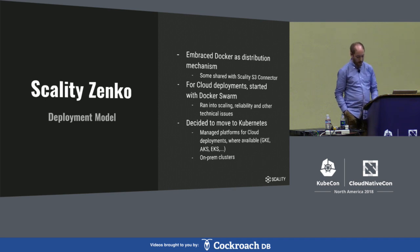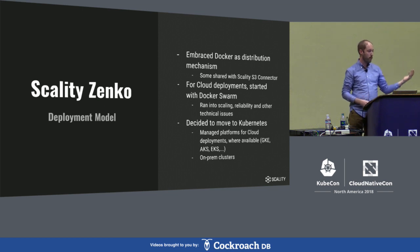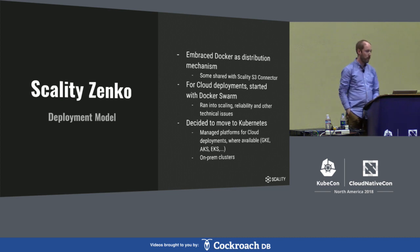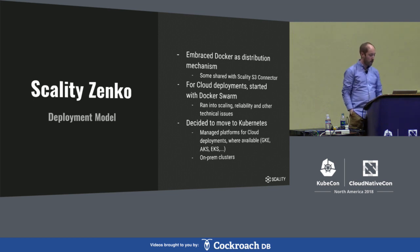The way we build Zenko was again using containers — some of these are shared with the S3 Connector solution because there are various similarities; in Zenko, all object access happens through the S3 protocol. For cloud deployments, we started by deploying on top of Docker Swarm, but we ran into quite some issues with stability and performance. So about a year ago — I believe it was December 2017 — we decided to move to Kubernetes.